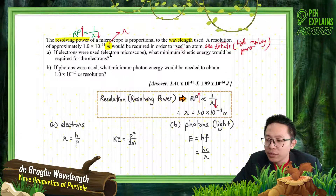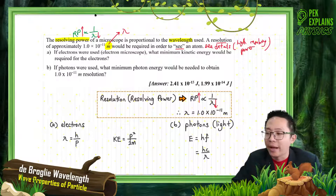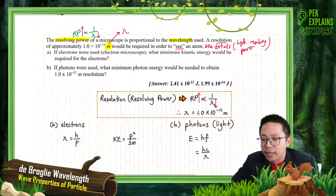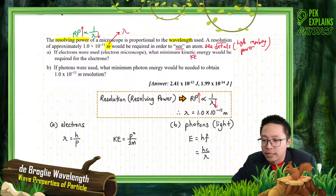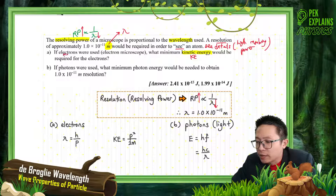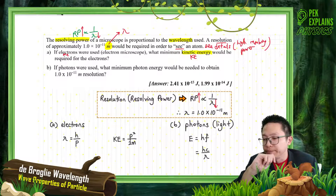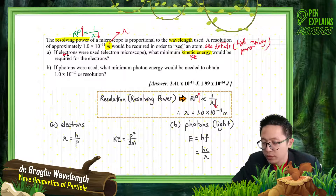Okay, now if an electron is used — electron microscope — what minimum kinetic energy would be required for the electrons? So the question needs kinetic energy. He wants the kinetic energy. You are using the electron. You are going to use the mass of electron and also charge of electron. If you are going to use electron, then you are using the mass of electron.